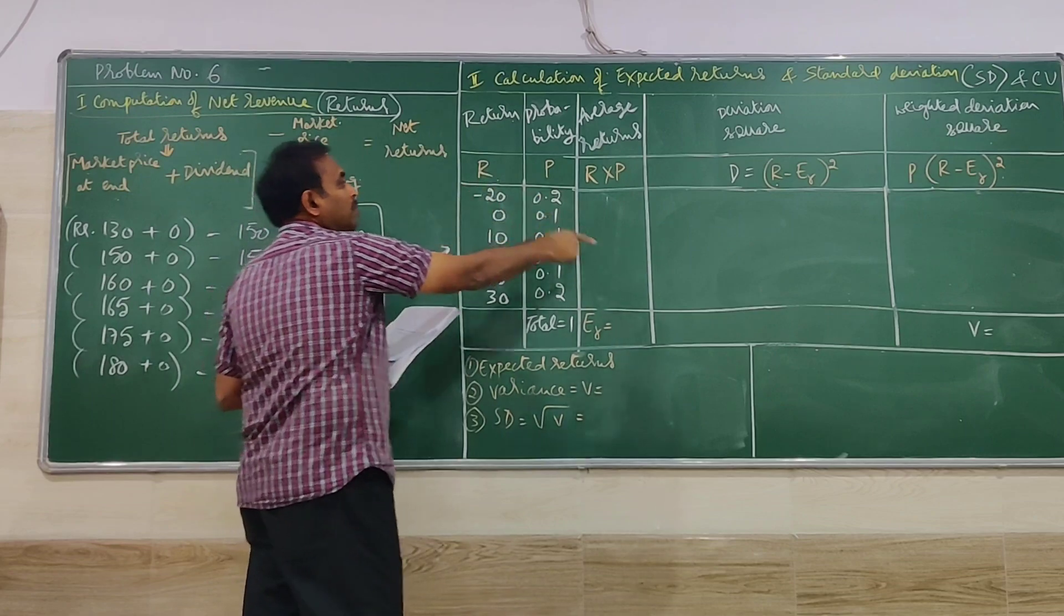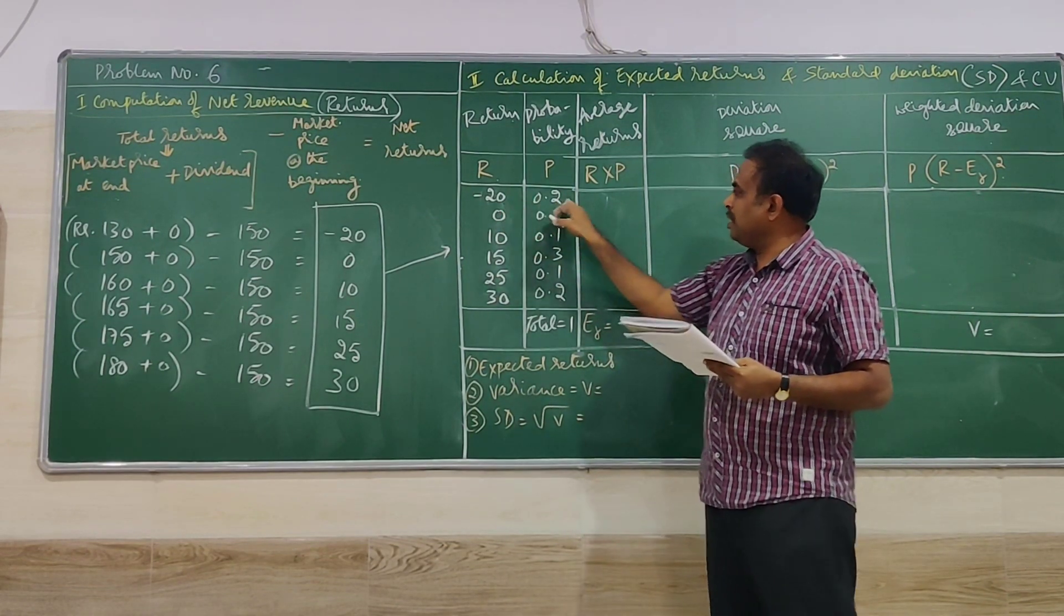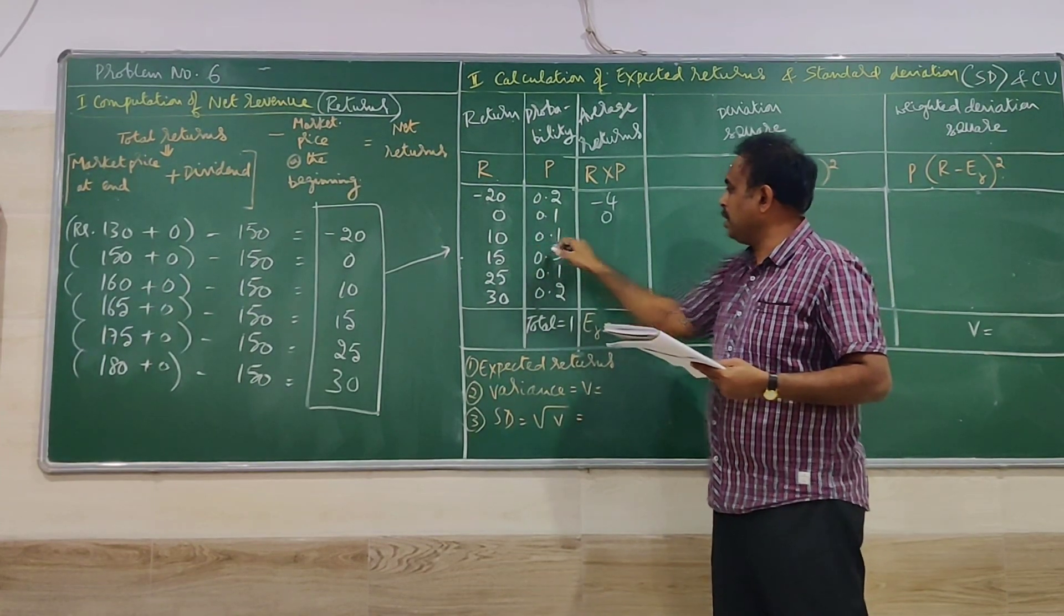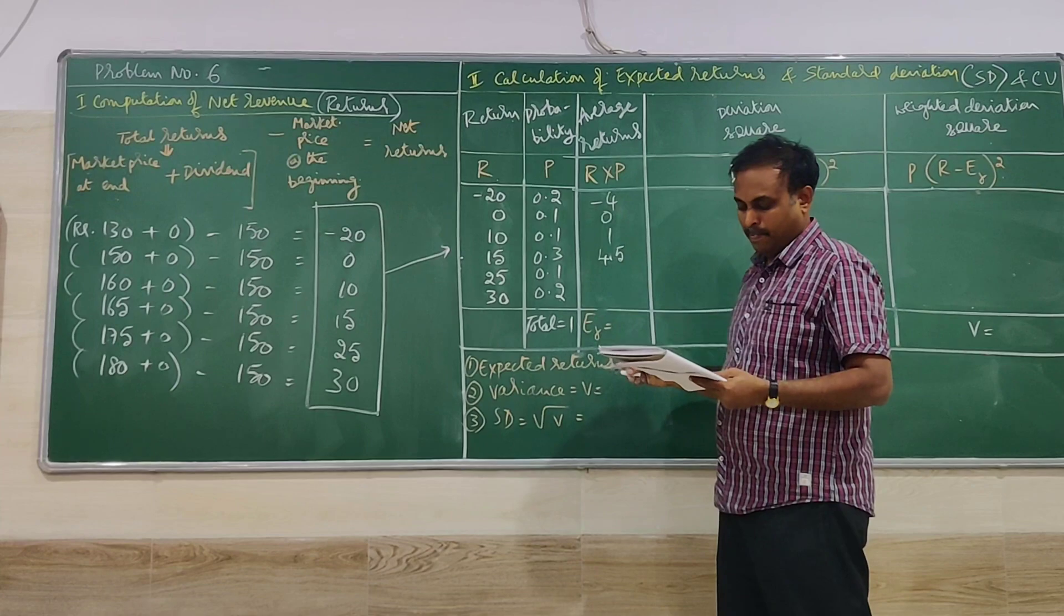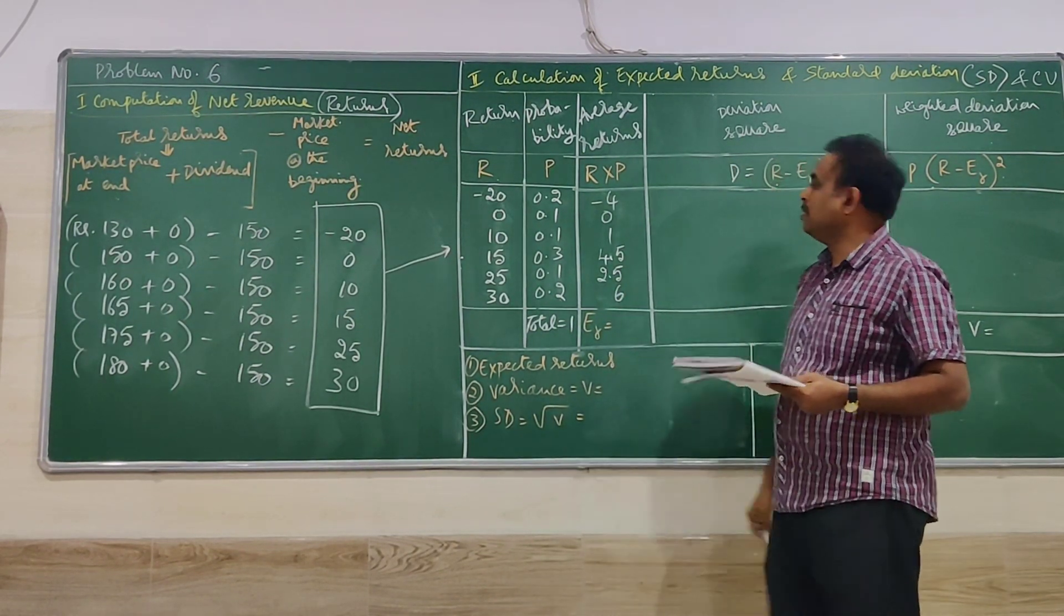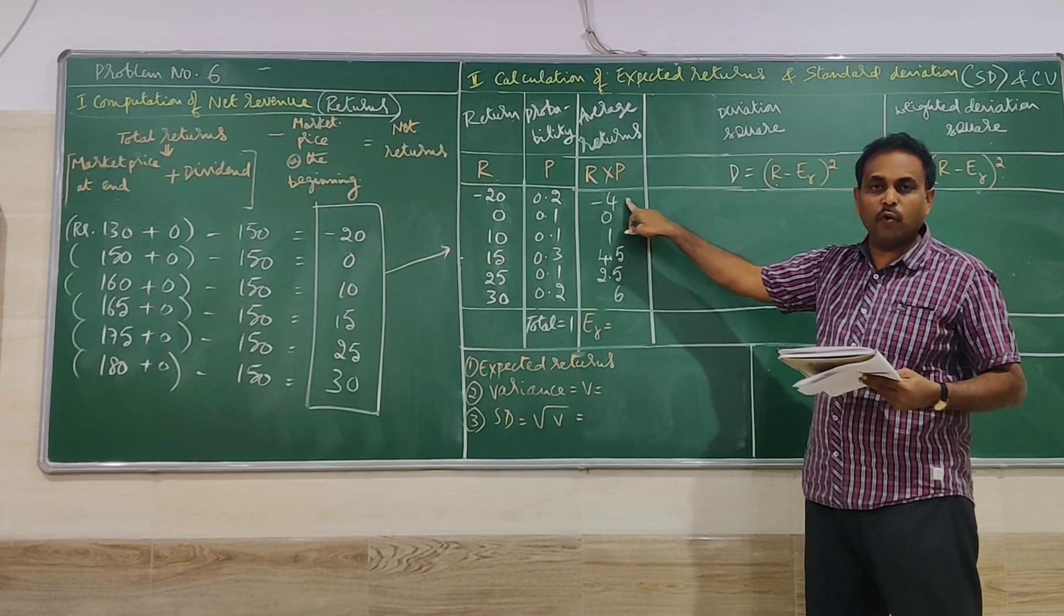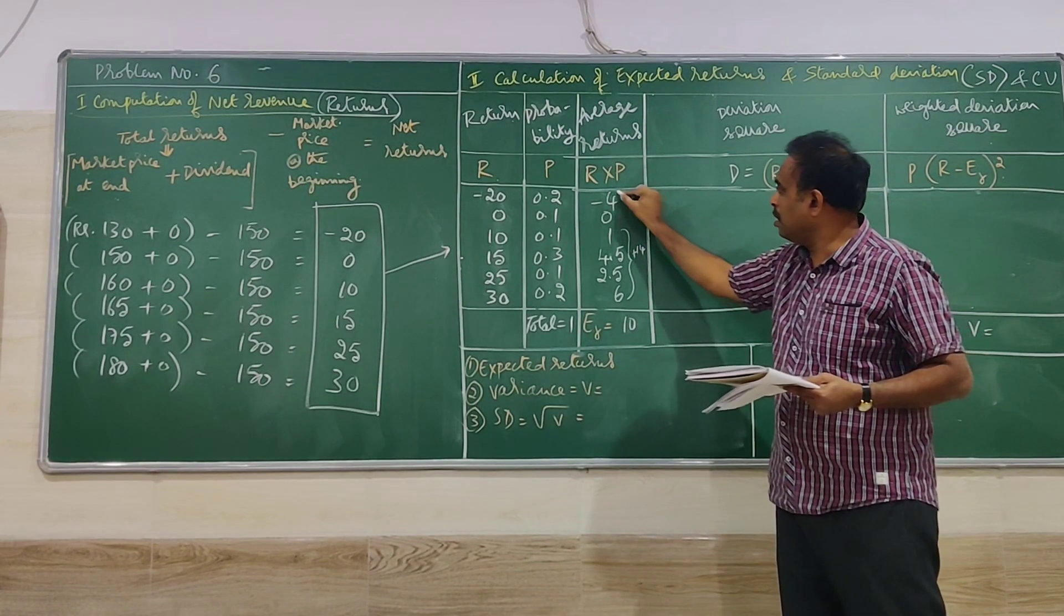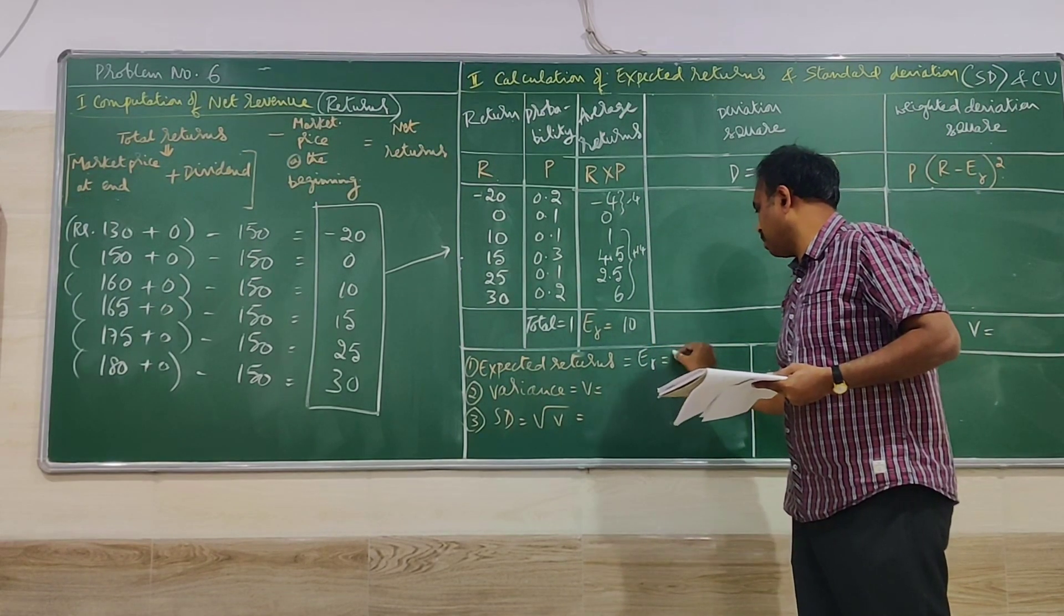So then multiply the returns into probability R into P. When we multiply minus 20 into 0.2, minus 4. Anything multiplied with 0 is 0. 10 into 0.1 is 1. 15 into 0.3 is 4.5. Then 25 into 0.1 is 2.5. 30 into 0.2 is 6. Then we have to be careful here. We got a minus value. First we have to add all the plus values, then minus 4. If you add all these, you are getting plus 14. This is going to be minus 4. Plus 14 minus 4 is equal to 10. This is where you have to be careful. So expected return is 10.